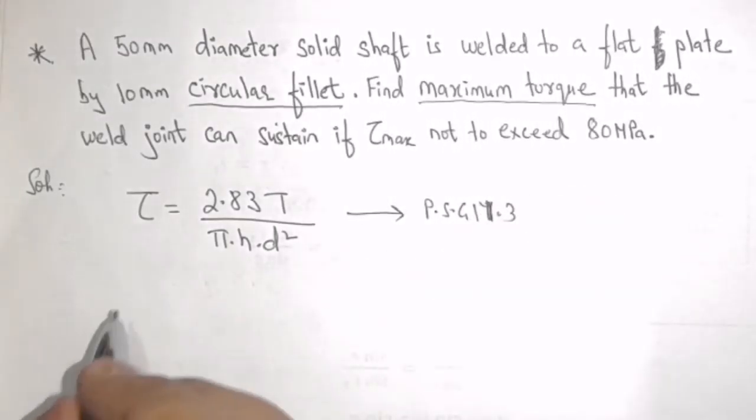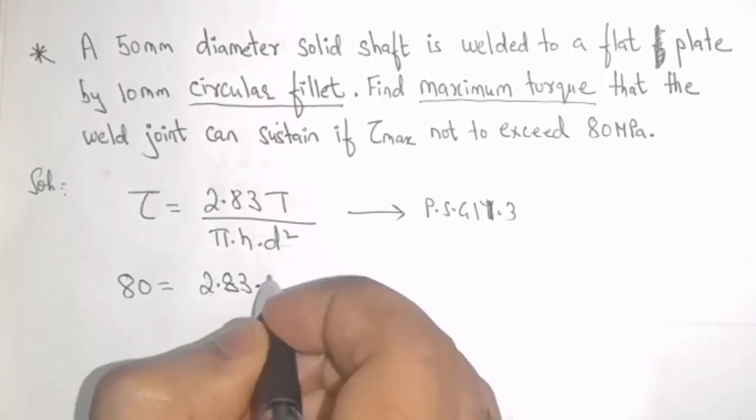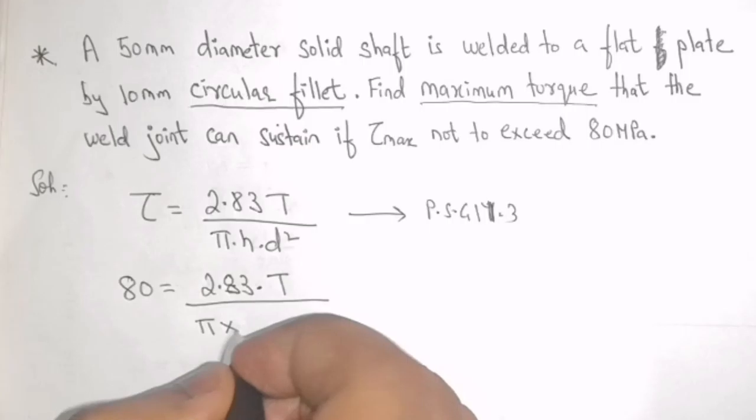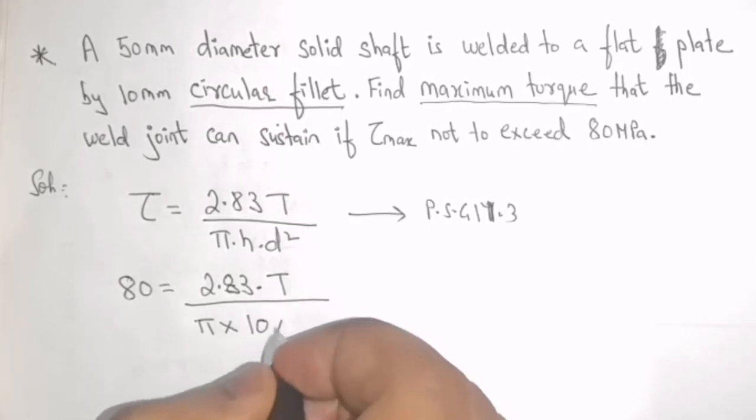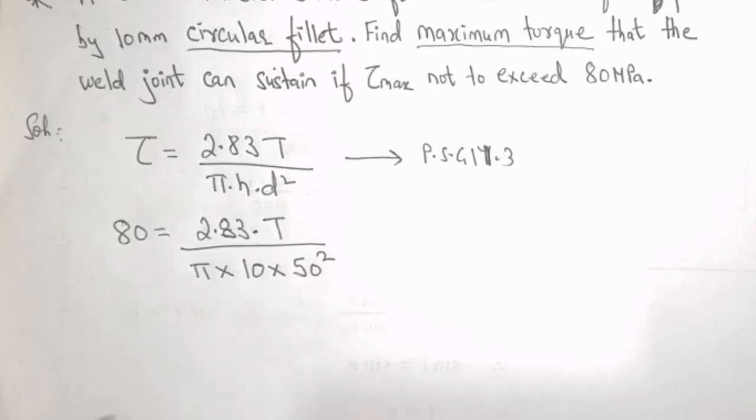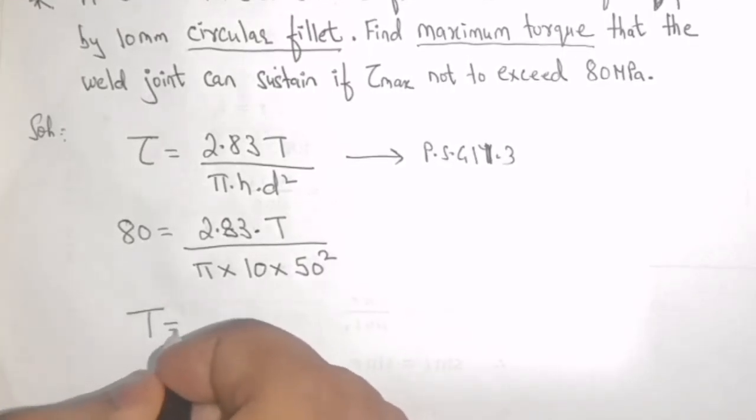Substituting the given values, Tau is given to us as 80, 2.83 T is unknown, pi into size of the weld is given as 10 mm into diameter is given as 50 mm. On solving this equation, I will get the value of T as 2.22 into 10 raise to 6 newton mm.